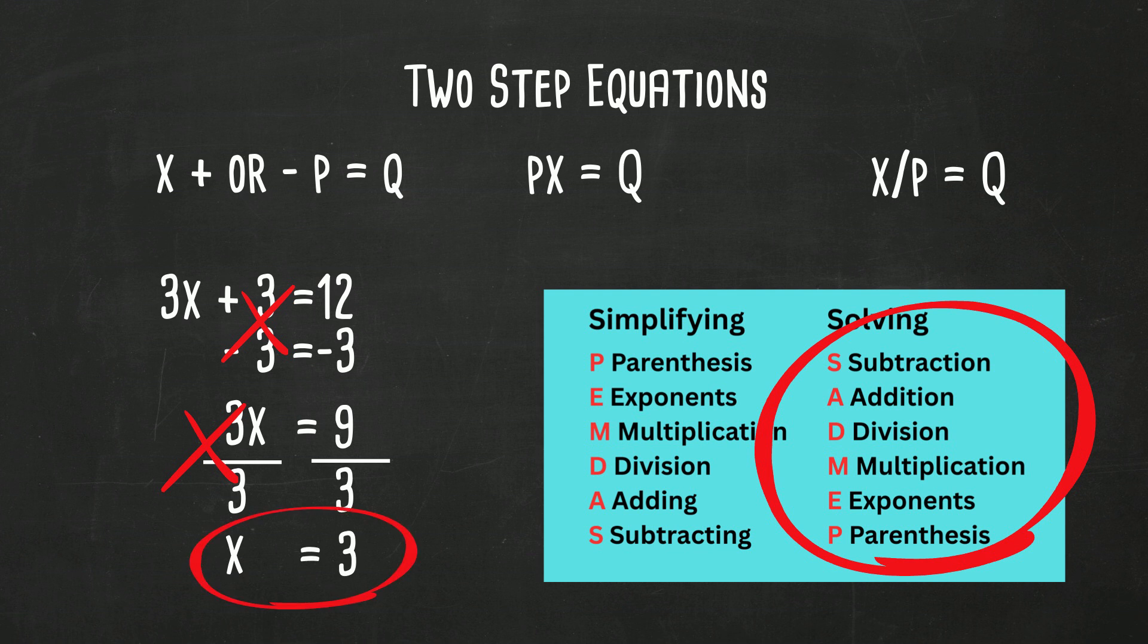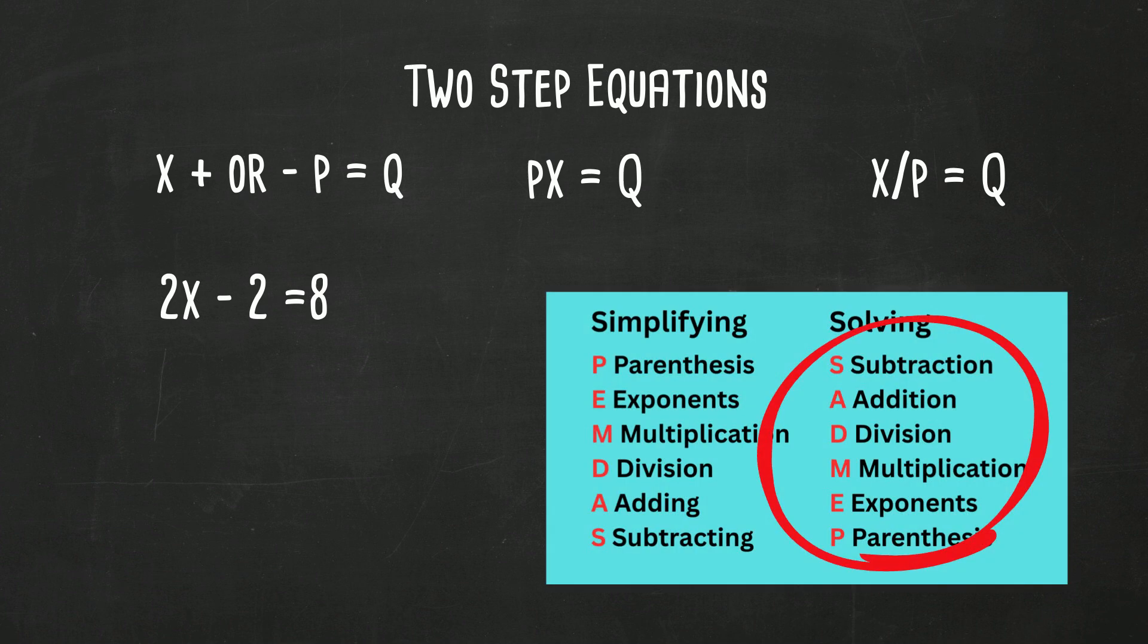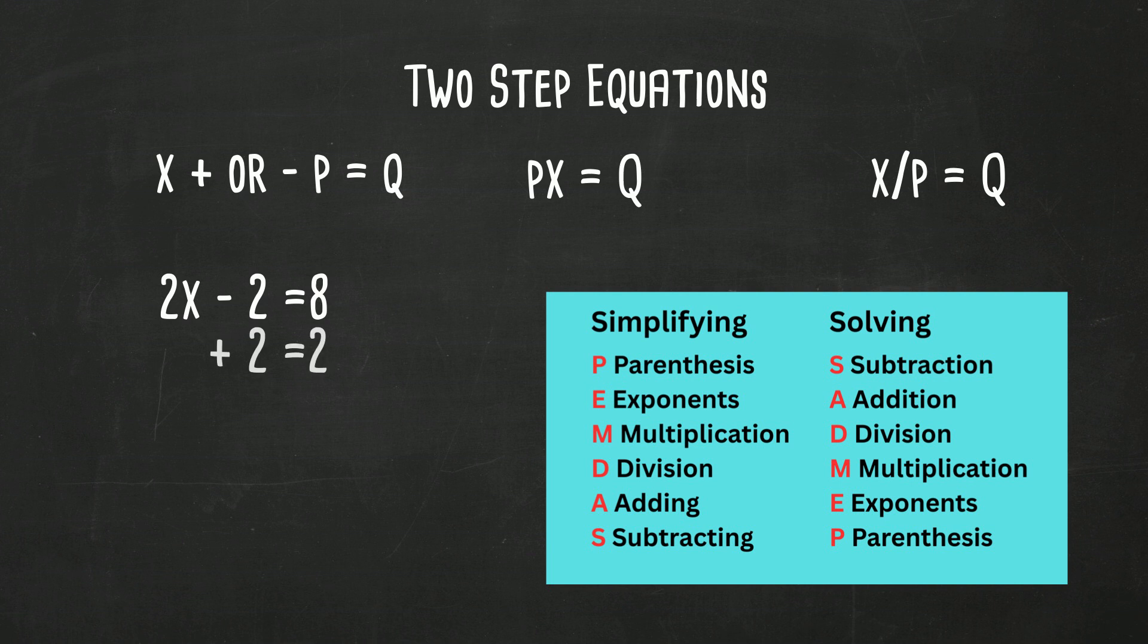Let's look at another example: 2x minus 2 equals 8. Again, we're going to use SADMEP. So we're going to undo the negative 2 with a positive 2. We're going to add 2 to both sides. So now we get 2x equals 10. Then we're going to get rid of the multiplication by dividing both sides by 2. The 2's cancel, and x equals 5.